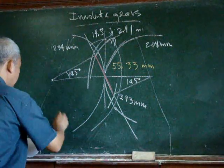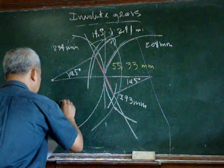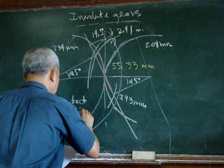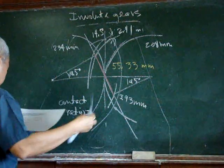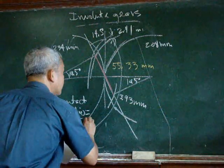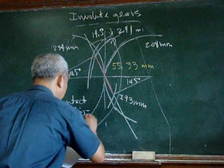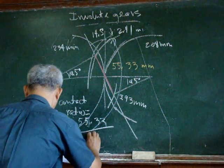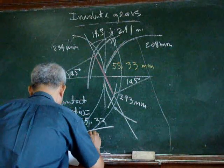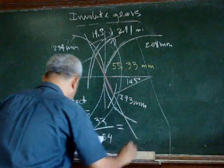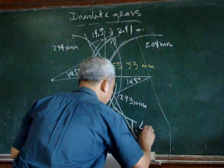And so our contact ratio is equal to 55.33 over the normal pitch, which is 39.54. And this is equal to 1.4.